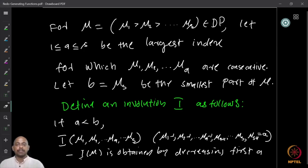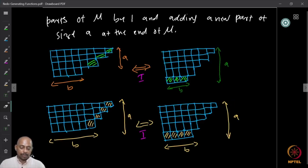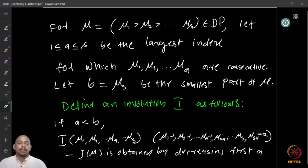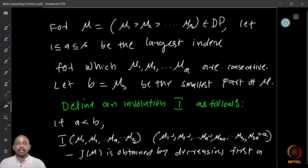Define b = μₛ, the smallest part of μ. In the example, the last part is 4, so b = 4. Since μ₁ is always present, a is at least 1, so a is between 1 and s, and both a and b are well-defined for any partition in DP.